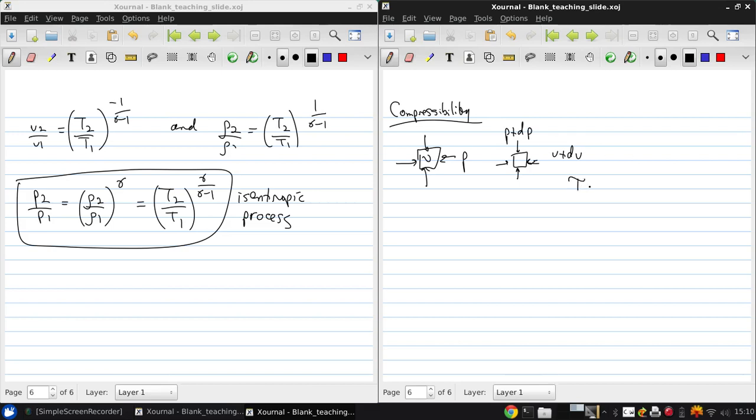The compressibility, tau, is defined as negative 1 over v times dv/dp. So this doesn't really tell us quite enough. It lacks detail, so the process affects the compressibility.